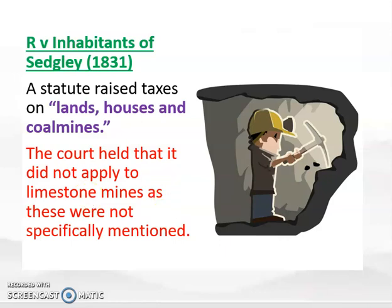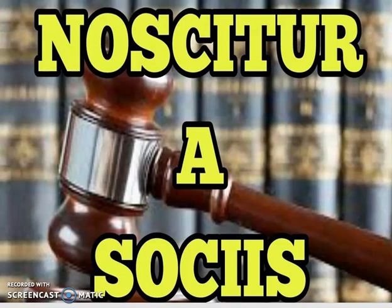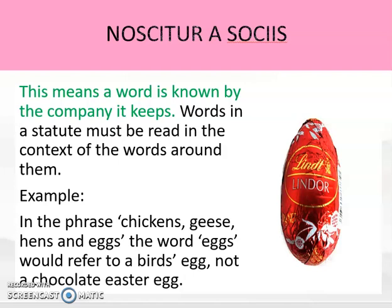Our third and final rule of language is Noscitur a Sociis. The word 'Sociis' is a bit like 'associates,' which gives you a clue as to what this rule is about. The definition is: a word is known by the company it keeps. Words in a statute must be read in the context of the words around them. Sometimes you can work out the meaning of an ambiguous word that could have more than one meaning just by looking at the other words surrounding it.